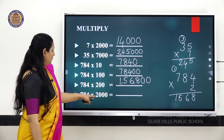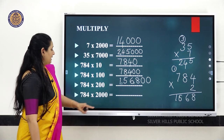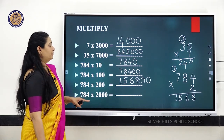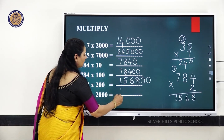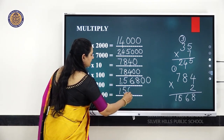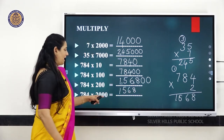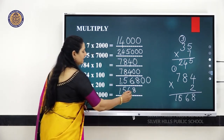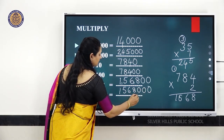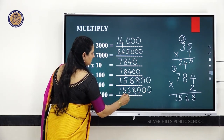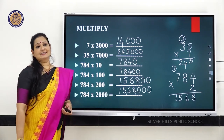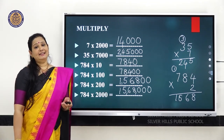Same number 784 multiplied by 2,000 — you know 784 into 2 is 1,568. Then add 3 zeros, so your answer will be 15,68,000.